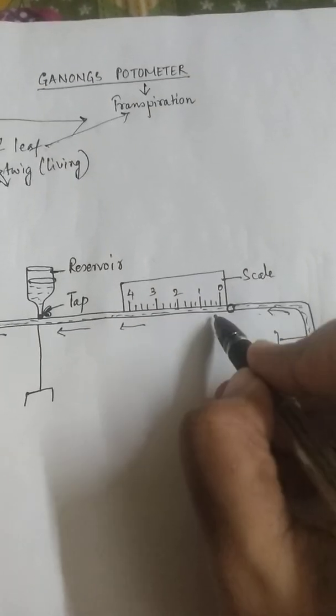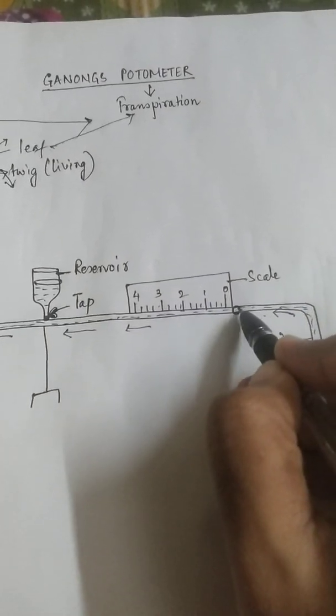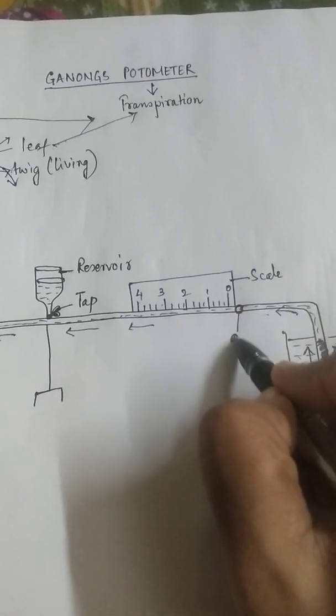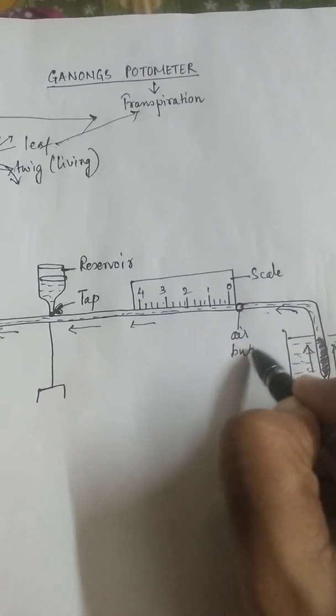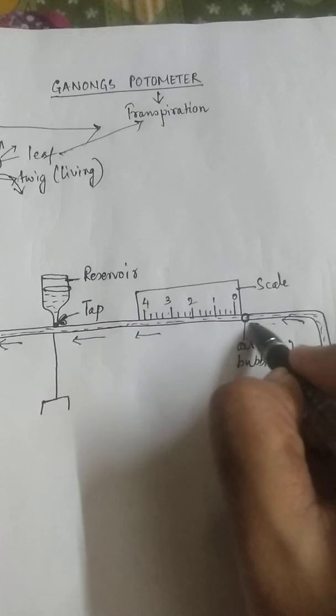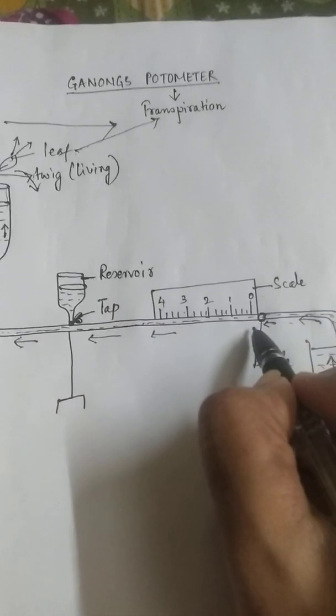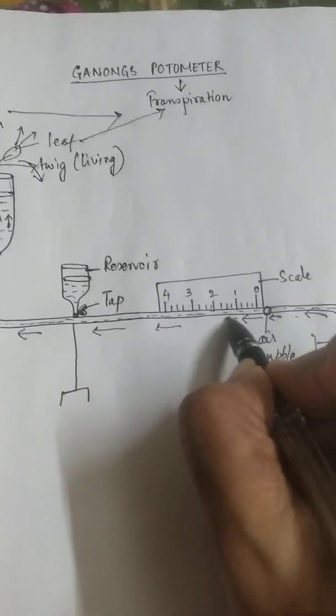And another thing which is happening is as this colored water is rising through the tube the water molecules they are moving in front. It is pushing these air bubbles. This is the air bubble which I had told you. This air bubble is being pushed and as the air bubble is being pushed the air bubble is moving forward.